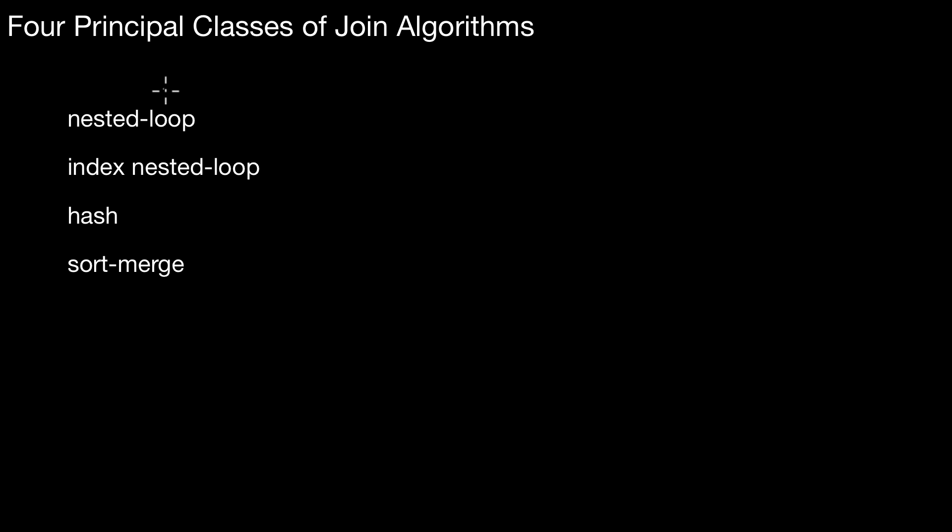So for all of those principal classes of join algorithms, there exist many, many variants, and we will only look at some of them. We will focus on the most important ones. And we will start with nested loop, which is really a trivial algorithm.